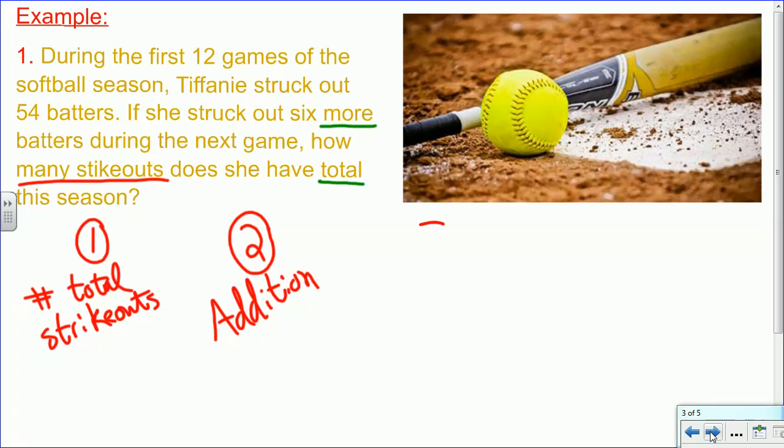Next, we have to carry out our plan. This is step 3. Please take all these notes with me. That's an awful-looking 3, but you can make yours look better. And we know that we don't have to worry about 12 games, and we don't have to worry about the next one was the 13th game. We just need to know that she had 54 batters, and then she got 6 more. So that's what we're going to add here. And we'll get 60.